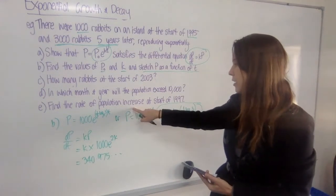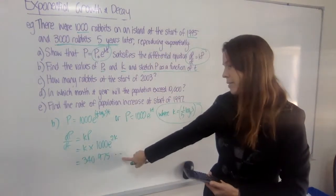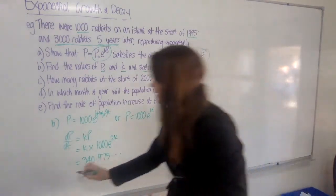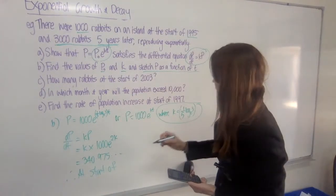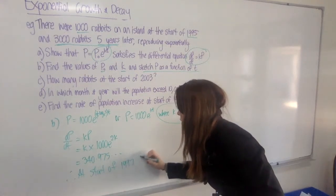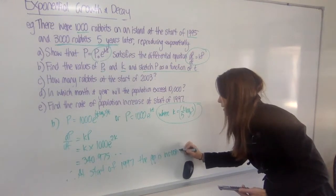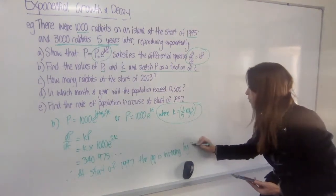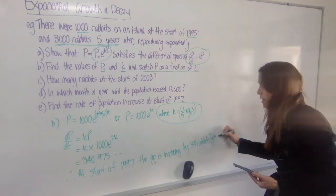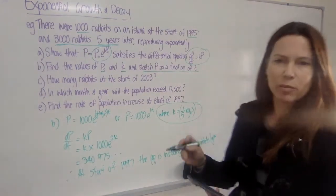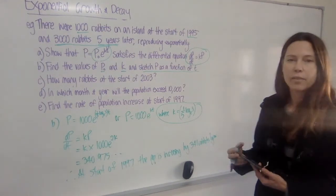Now think what this means. What's the rate of population increase? Well, that's the change in population over time. This is in rabbits. So let's round it to the nearest rabbit and say at the start of 1997, the population is increasing by, let's say, 341 rabbits per year. Now that rate is changing all the time. The next day, even, it would be slightly different, wouldn't it? But exactly when t equals 2, that's our rate of increase.